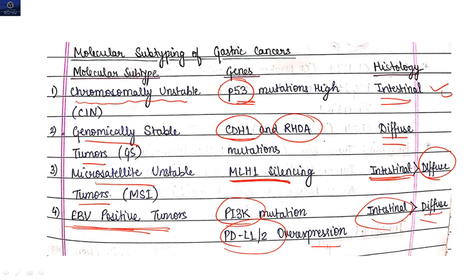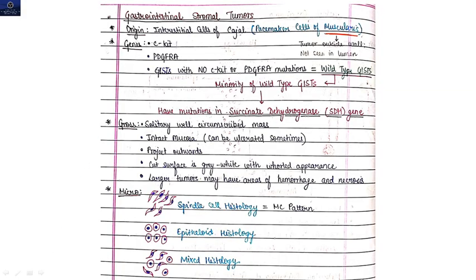So these are the molecular subtypes: chromosomally unstable, genomically stable, microsatellite unstable tumor, and Epstein-Barr virus positive tumors. Let's just note down the names because they are important for your MCQs. Now coming to the next one, that is gastrointestinal stromal tumors.